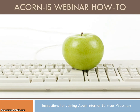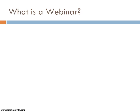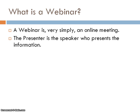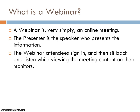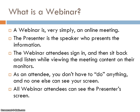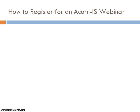Acorn Internet Services webinar: how-to instructions for joining Acorn Internet Services webinars. What is a webinar? A webinar is very simply an online meeting. The presenter is the speaker who presents the information. The webinar attendees sign in and then sit back and listen while viewing the meeting content on their monitors. As an attendee, you don't have to do anything, and no one else can see your screen. All webinar attendees can see the presenter's screen.